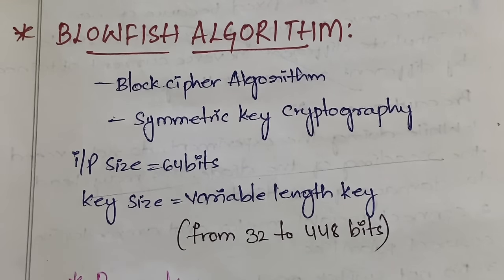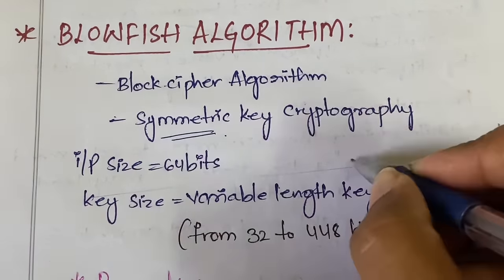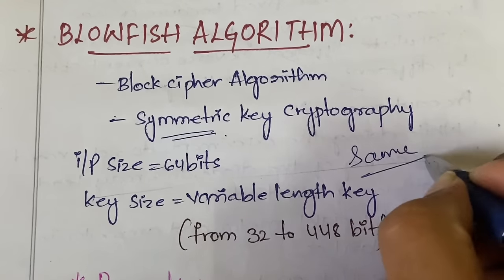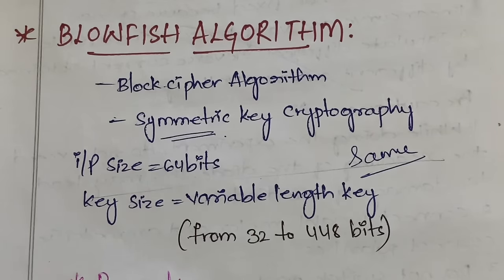First of all, Blowfish is a block cipher algorithm, and the second thing is it follows symmetric key cryptography. In symmetric key cryptography, you use the same key on both sides. In asymmetric key cryptography, for encryption you use one key and for decryption you use the other one. In symmetric, the same key is used on both the encryption and decryption side.